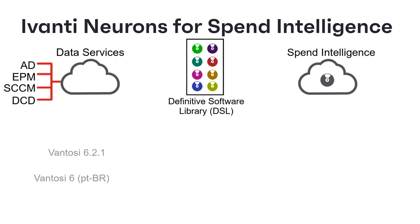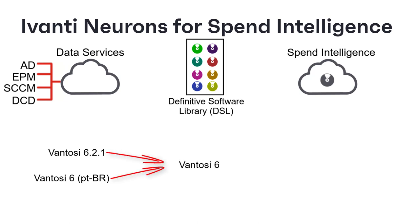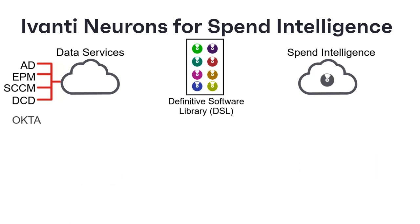There will be lots of slightly different versions of the same application, possibly in different languages or with slightly different names. Ivanti Neurons for Spend Intelligence matches all this discovered software with items in the Ivanti Definitive Software Library. Not only does this link all of the different discovered software titles that are actually the same item to the same single definitive title — giving you a better idea of what's actually installed on your estate — it also knows which of these titles require a license. Similarly, when you create a connection to your single sign-on subscription, Ivanti Neurons for Spend Intelligence collects and curates a huge amount of usage data for all of the associated single sign-on applications.